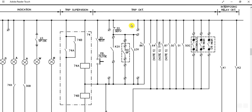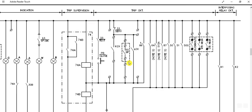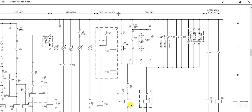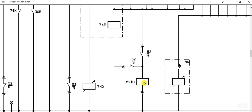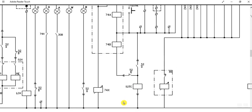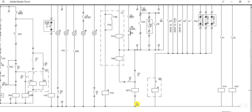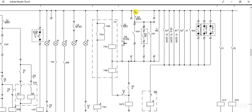Suppose the breaker is in test position and you want to trip it through the local push button station. If you press the push button, this contact will close, the path will be followed, and this is the trip coil of the circuit breaker. The trip coil will be energized and the circuit breaker will be tripped.